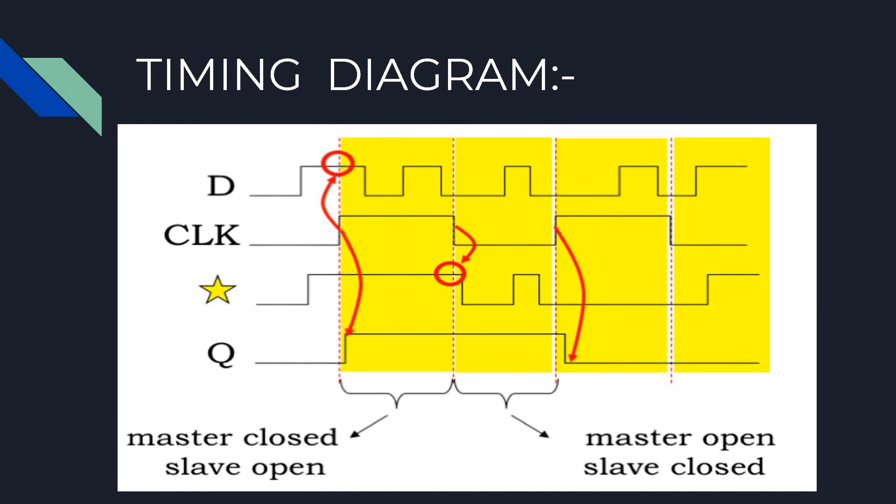Now let's look at the Q signal by itself for a moment. It only changes when the slave latch opens at the rising edge of the clock. The rest of the time either the input to the slave latch is stable or the slave latch is closed.